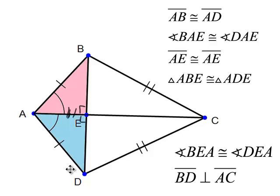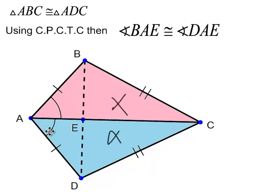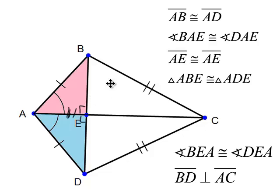If these two angles are each 90 degrees, then these lines are perpendicular. So, we started with two triangles, proved those were congruent, picked off information using CPCTC, proved another pair of triangles congruent, and consequently showed that the two lines are perpendicular. That's the whole reason why we're learning CPCTC.